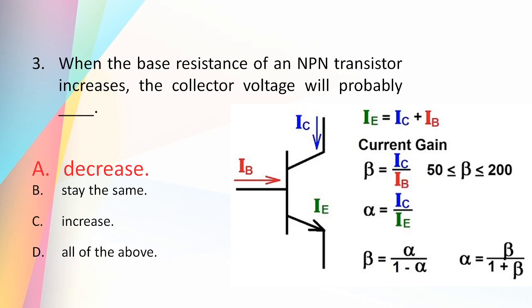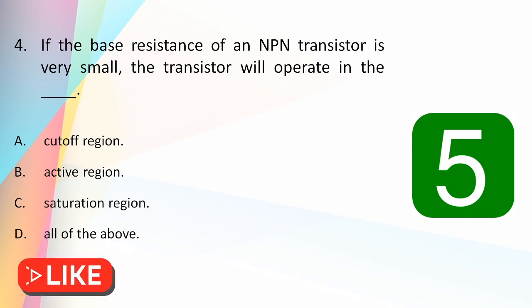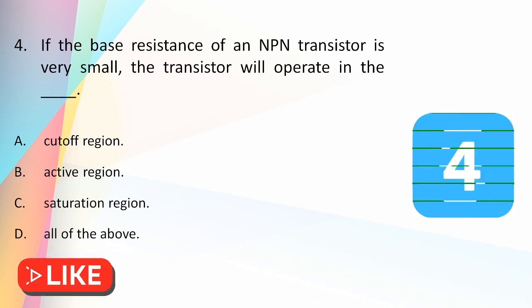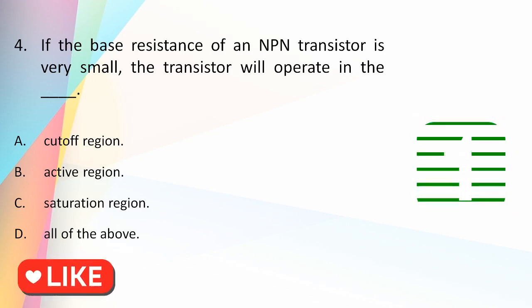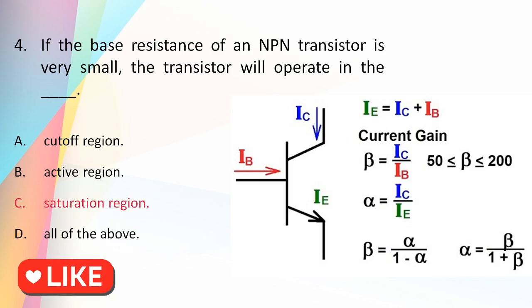If the base resistance of an NPN transistor is very small, the transistor will operate in: the cutoff region, active region, saturation region, or all of them? The answer is saturation region. If the base resistance is very small, then the base current is very high. Since IC = β·IB, the collector current becomes enormously high, and in this condition the transistor operates in the saturation region.